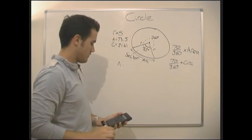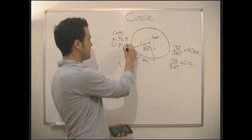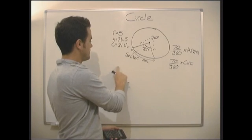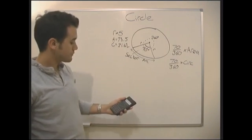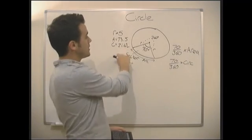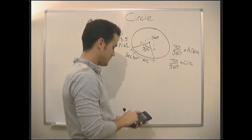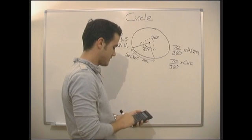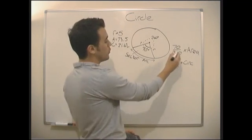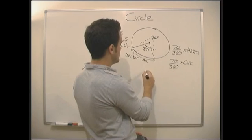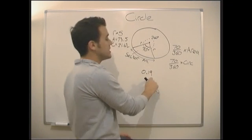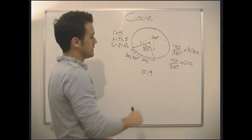So what we need to do is times these two numbers by 70 over 360. So 70 divided by 360 gives us our fraction, 0.19. So we've got 0.19, very nearly a fifth of the circle here.